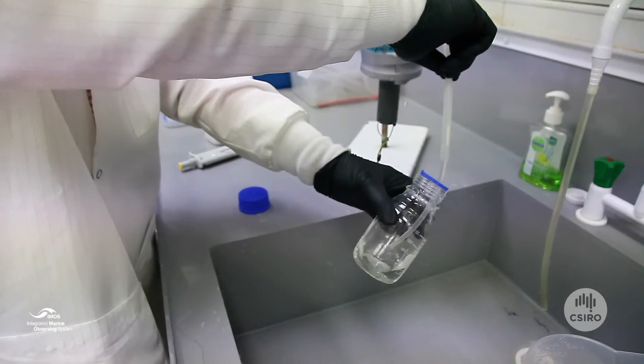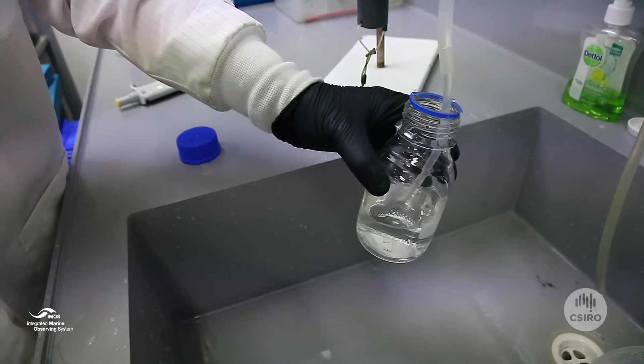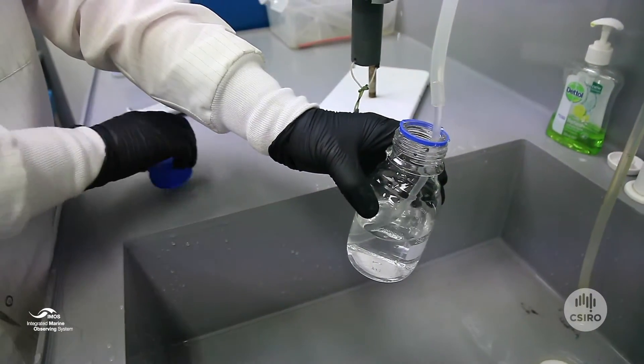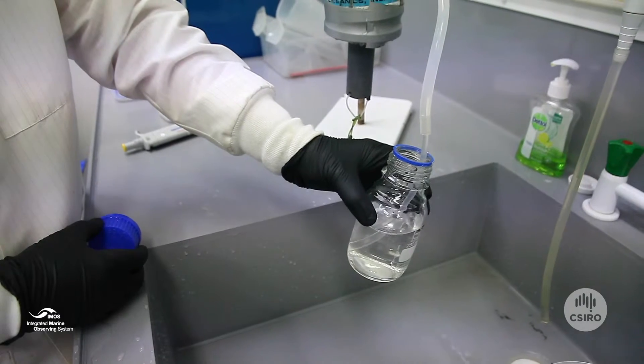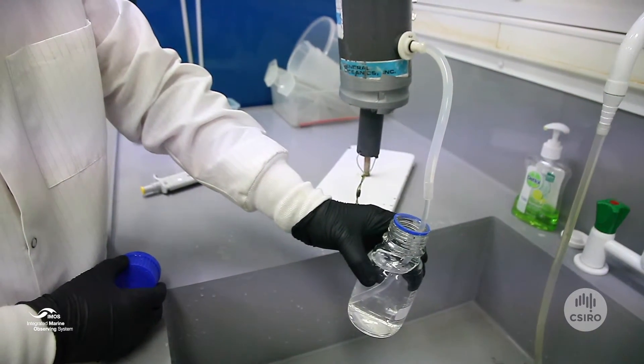Then gradually release the tube to start the flow again without adding bubbles. Allow the bottle to fill and then overflow, and rinse the lid three times.